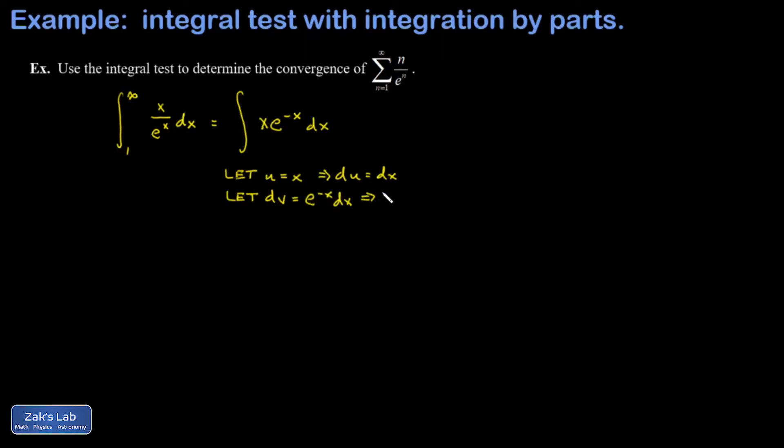I need to guess the anti-derivative of that, and accounting for the chain rule that anti-derivative is negative e to the negative x. It looks like I forgot my limits of integration for a second, so I'll get those in there, one to infinity. Then I apply integration by parts and I get uv.